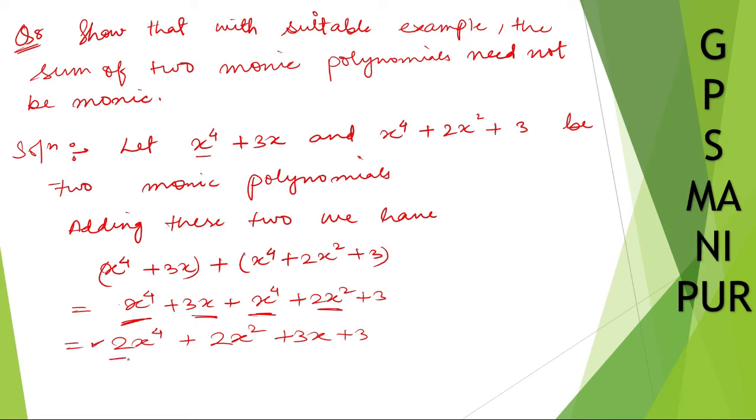Now after adding two monic polynomials, is this a monic polynomial? It is not, right? The coefficient of the highest power is 2, so this is not a monic polynomial.